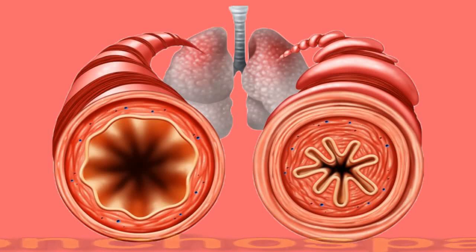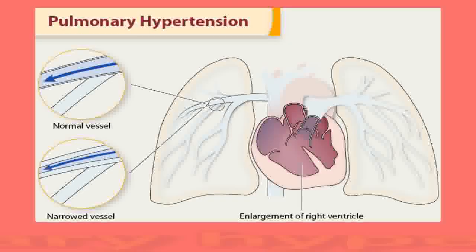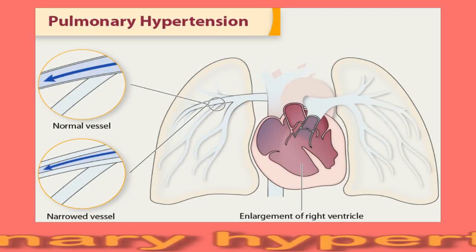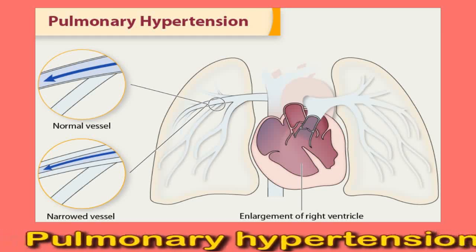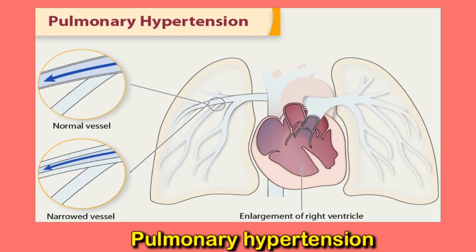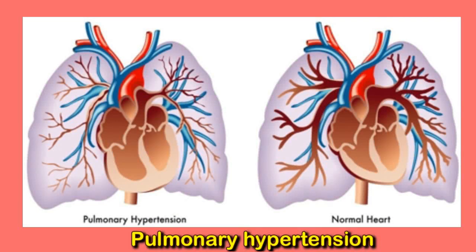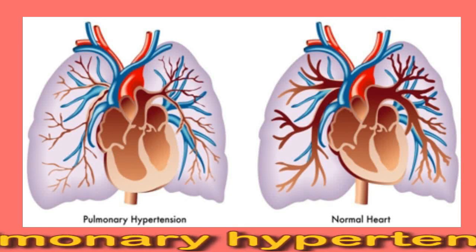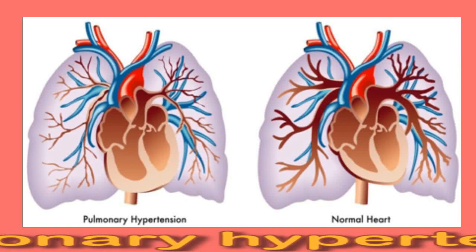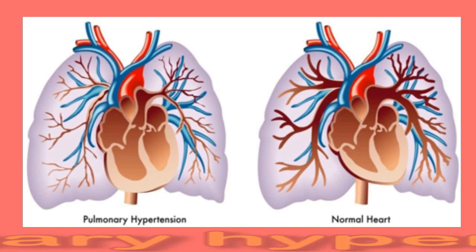According to a 2018 article, exercise-induced bronchospasm typically occurs two to five minutes after exercise and resolves within one hour. Pulmonary hypertension refers to a specific form of high blood pressure that affects the arteries of the lungs. Symptoms of pulmonary hypertension include chest pain, rapid heartbeat, shortness of breath, fatigue, and loss of appetite.